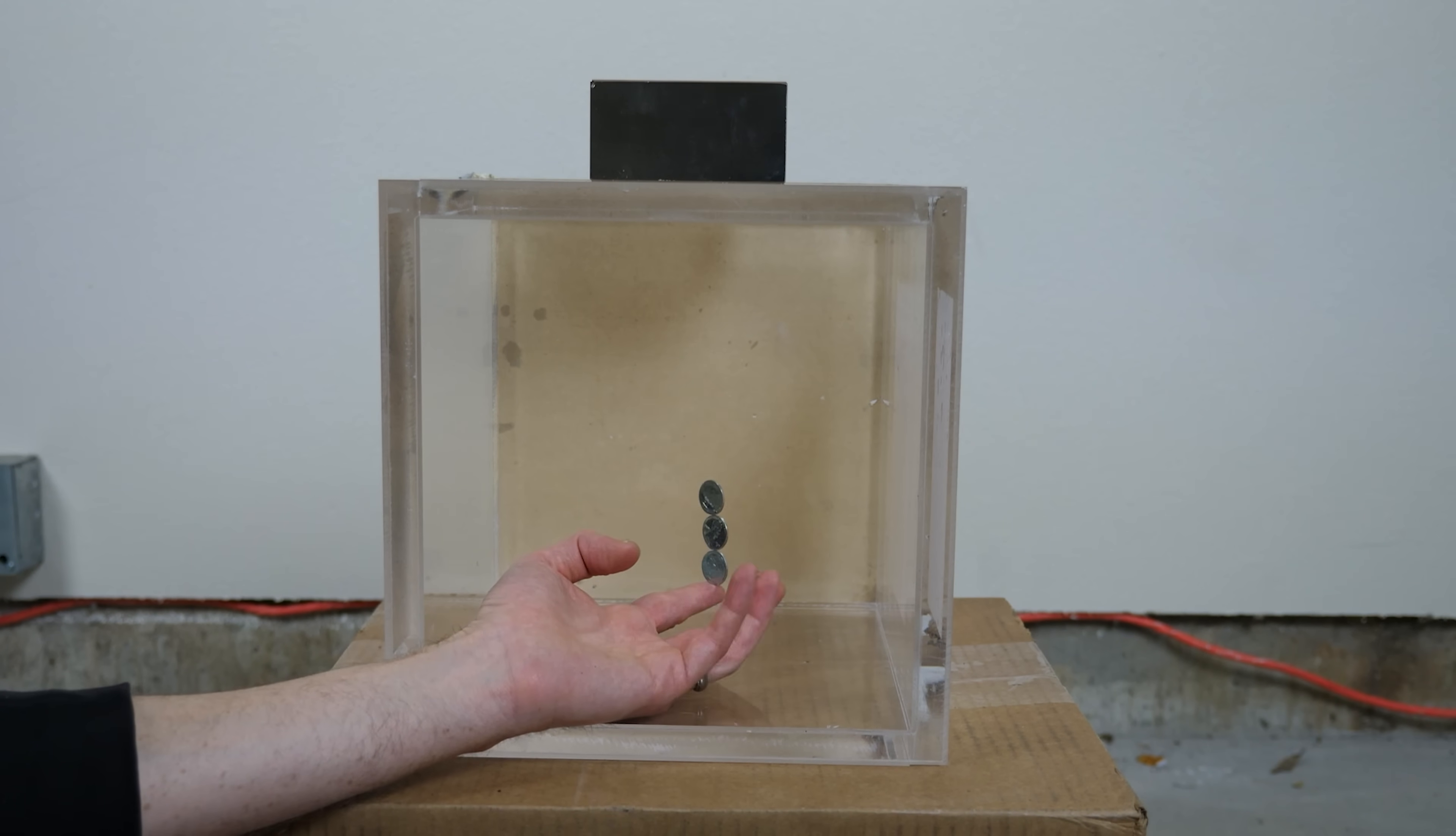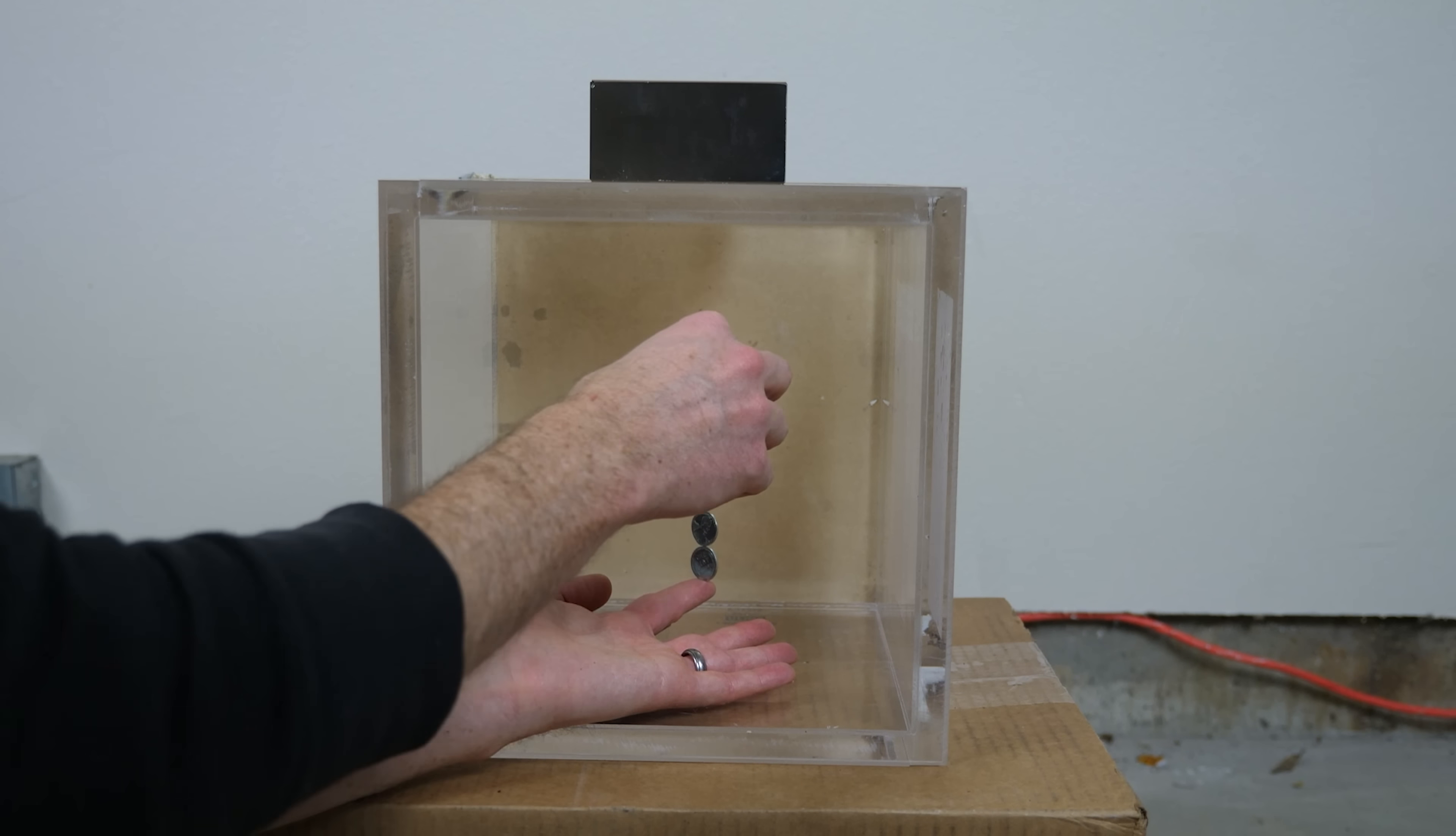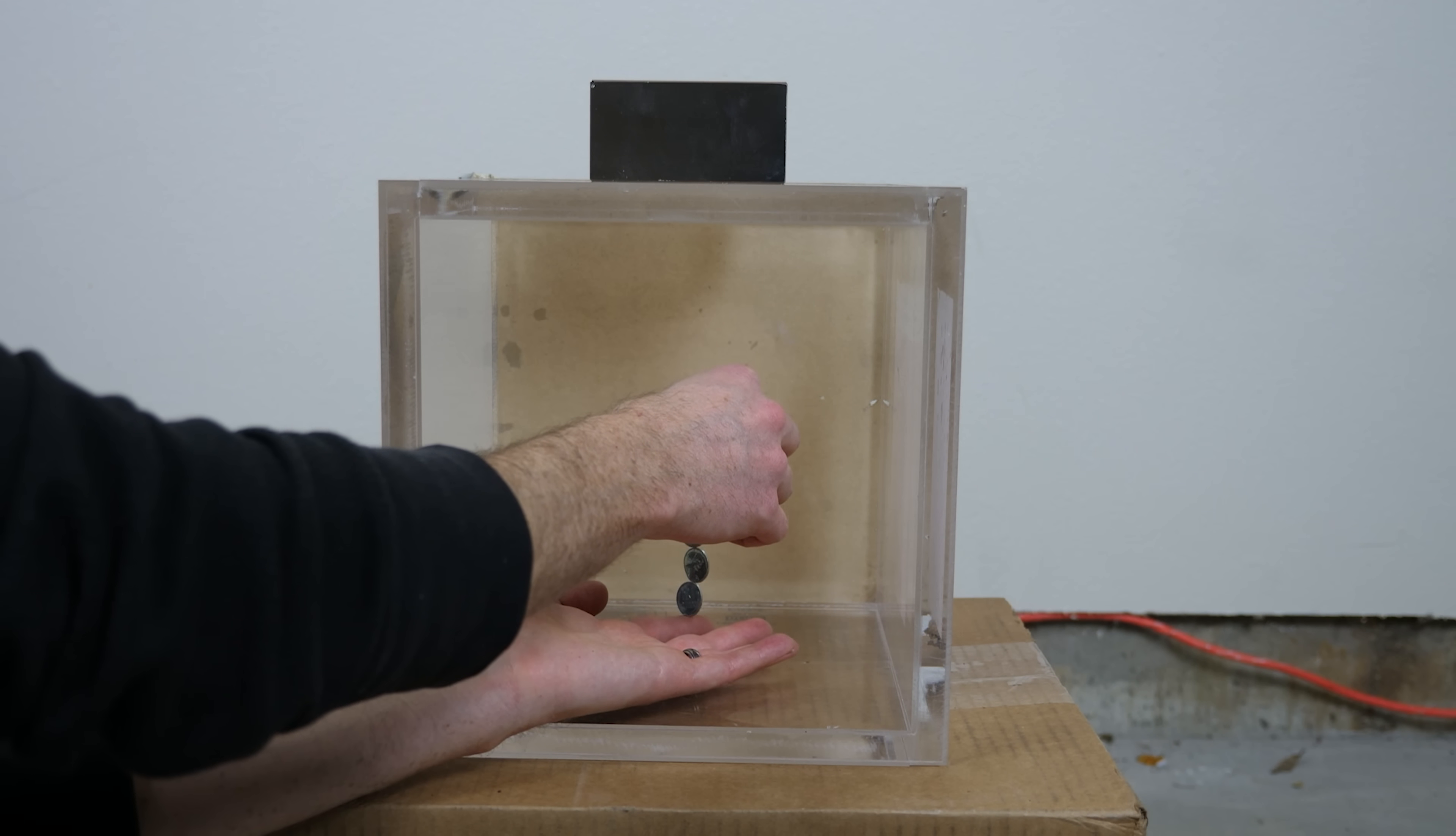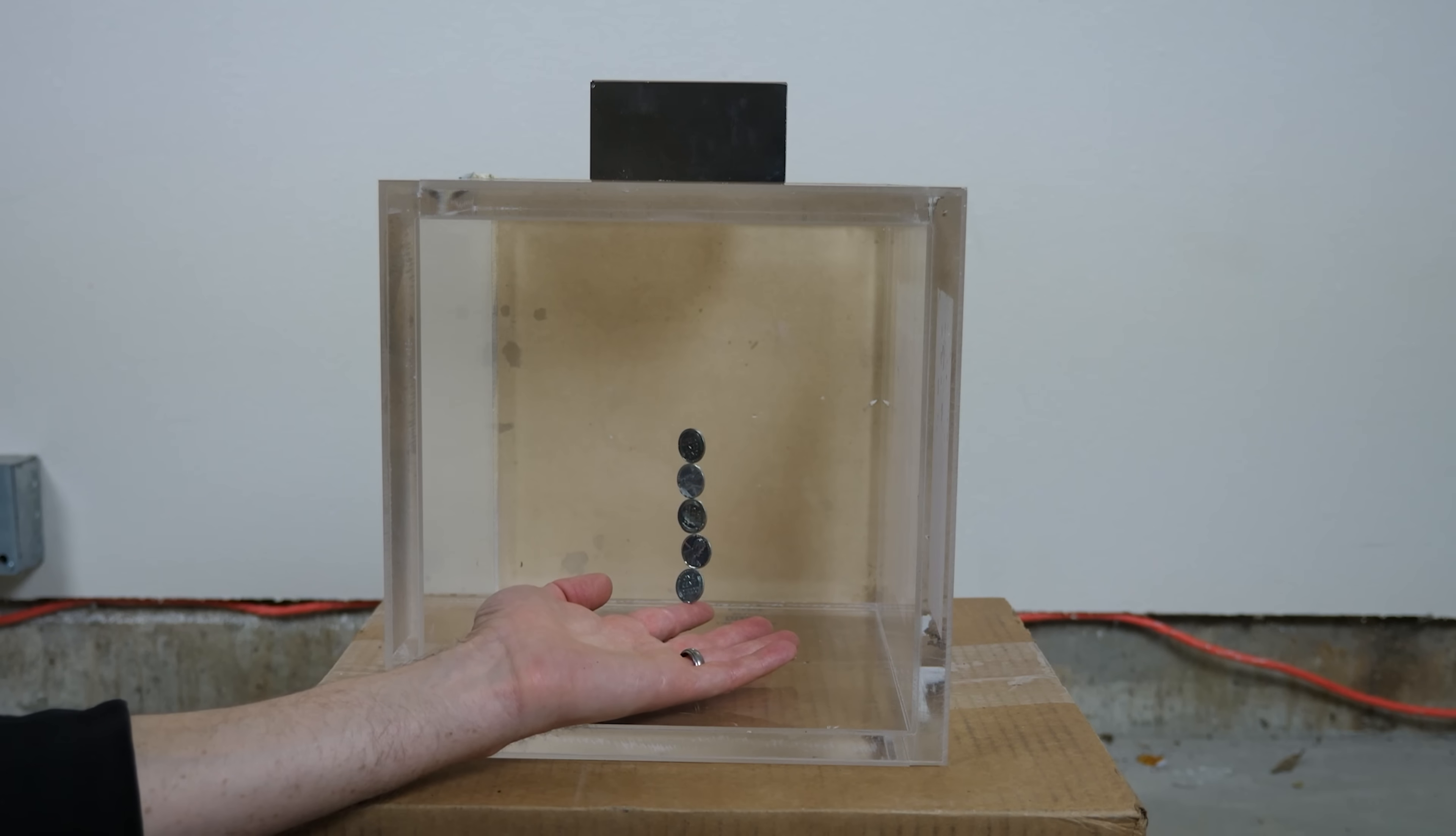So what you can do is you can start to balance the pennies on your hand. The steel pennies naturally form chains. That's because in the presence of a magnetic field, the pennies become their own magnets with north and south poles.